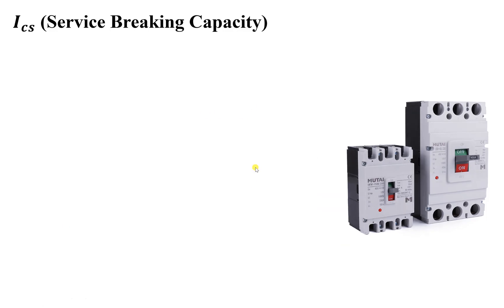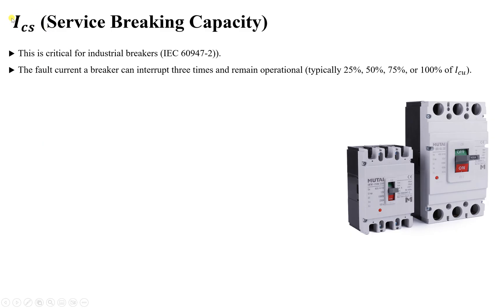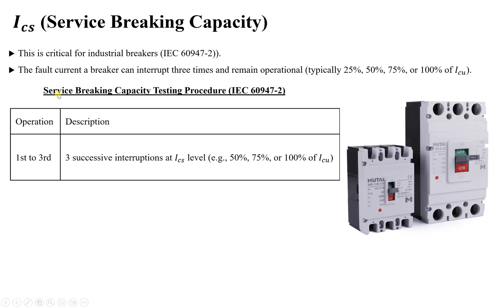The next value is ICS — the Service Breaking Capacity — which we have just seen on the nameplate. This is critical for industrial breakers per IEC 60947-2. The ICS value on the circuit breaker means the breaker can interrupt that fault current at least three times and remain operational. Typically ICS is given as 25%, 50%, 75%, or even 100% of ICU, and the breaker must withstand this value at least three times.